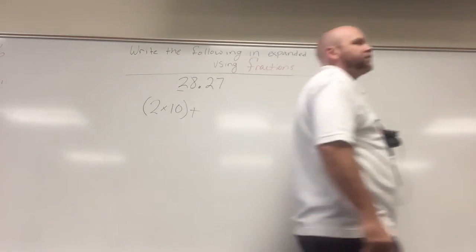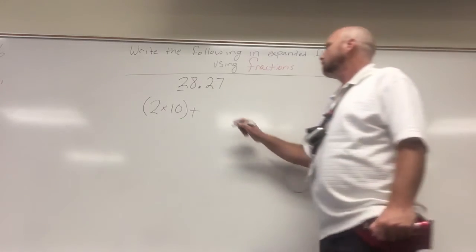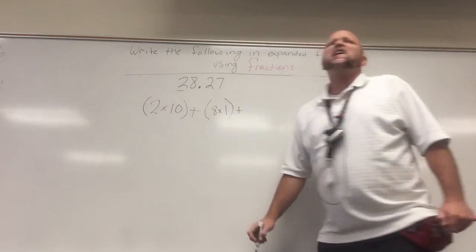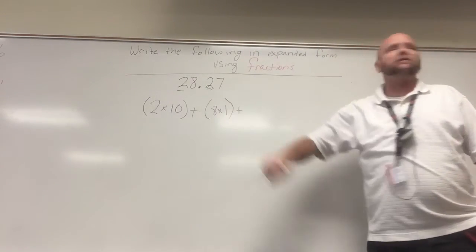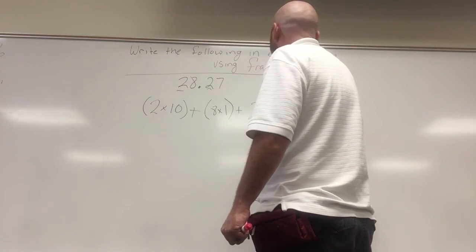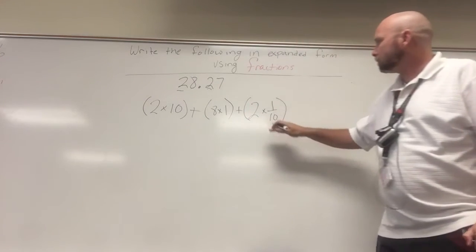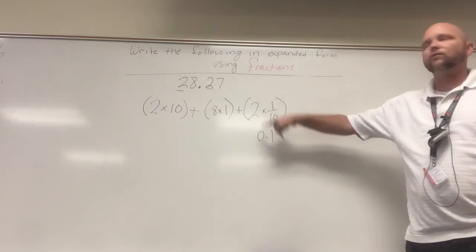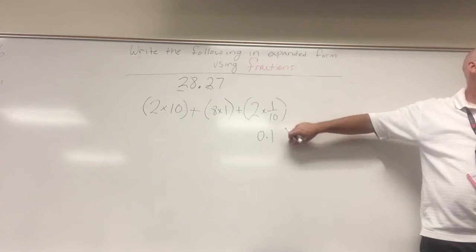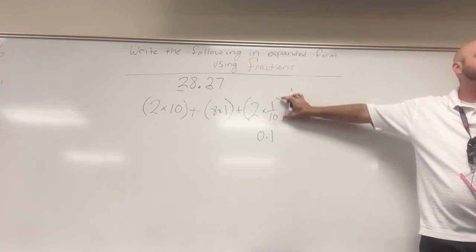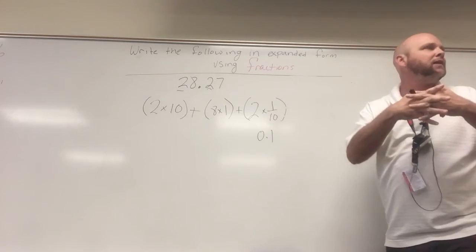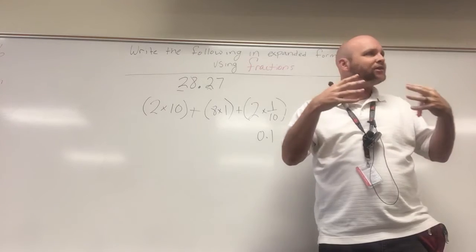So we have two times ten. Plus, Kelly, what place value is the eight in? The ones. The ones. Plus, eight times one. Kelly, what place value is this two in? Tenths. Tenths. So we have two times one-tenth. Remember, you can say one-tenth, it can be written as that or that. It's pronounced the same. So that's why, if you write it in fractions, it's the same as writing it in decimals. Because these two numbers are exactly the same value. Because fractions, decimals, and percents are all the same. They're all linked.